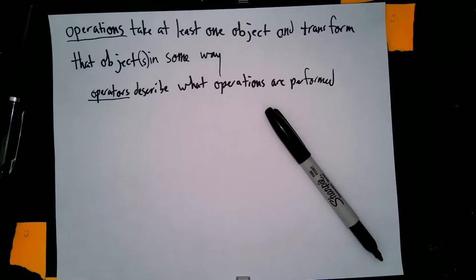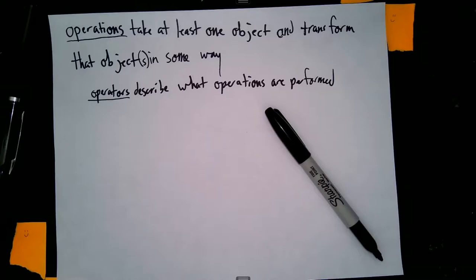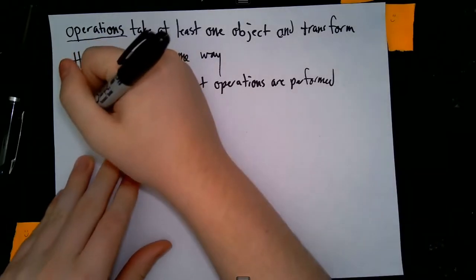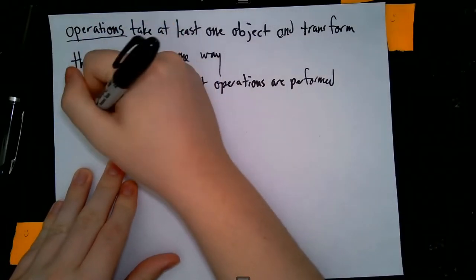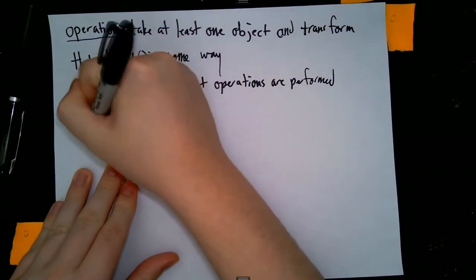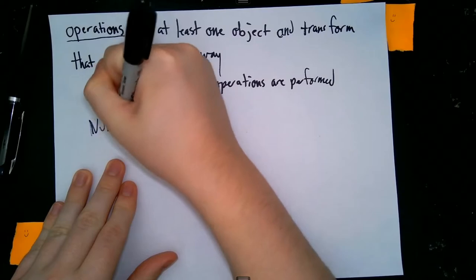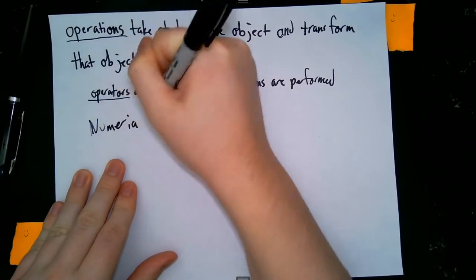An operation is a process that takes at least one object and transforms that object or objects in some way, and operators describe what operations are performed. You've actually seen operations and operators before, specifically when talking about numbers.